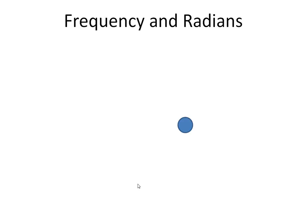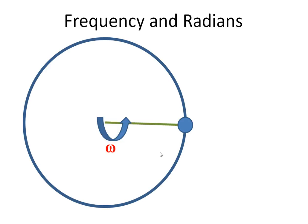In this screencast, we're going to look at the relationship between frequency and radians. Let's say we have an item here, and we're going to rotate it about a radius r at an angular velocity, omega. As it rotates, it will create a circle.